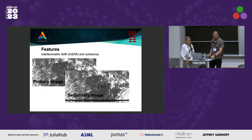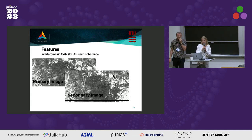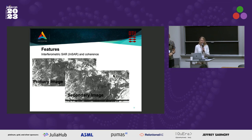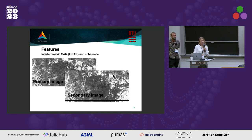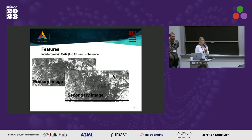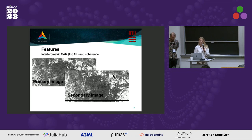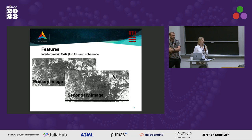Now we will move to the interferometric synthetic aperture radar part of the package. The so-called InSAR is a measurement of the phase change between two SAR images acquired over the same terrain but at different dates and times. By measuring this phase change, we can derive very precise ground displacement with an accuracy up to a few millimeters — this is why it's so exciting. We are working with Sentinel-1 single-look complex data, which contains information about the phase, and this is the information we mainly work with in InSAR.